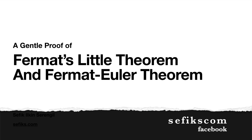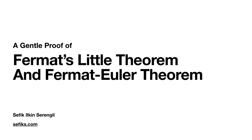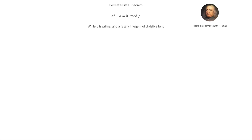RSA depends on two important theorems: one is Fermat's Little Theorem, and the second is its expanded version, Euler's theorem. Today we are going to prove those theorems to understand how and why RSA works. Fermat's Little Theorem is called 'little' because Fermat's Last Theorem took 350 years to be proven. It states that a to the power of p minus a is equal to zero mod p, where p is a prime number and a is any integer not divisible by p.